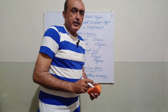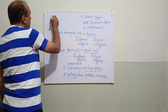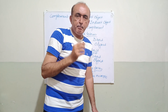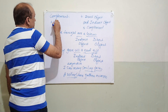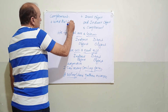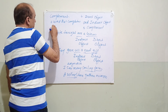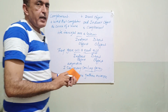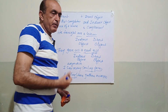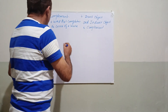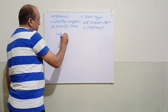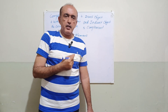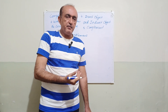Now we come to the last one — complement. A word that completes the sense of the sentence is called a complement. We compare complement and object complement with direct object and indirect object. The first type is subject complement. Subject complement can be an adjective, a noun, or an infinitive — but this word completes the sense of the subject.